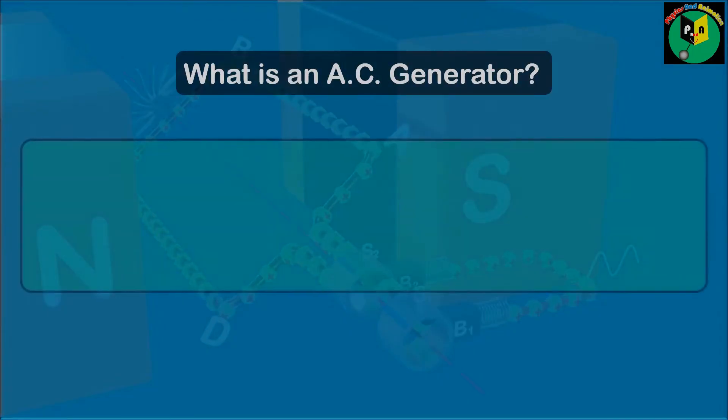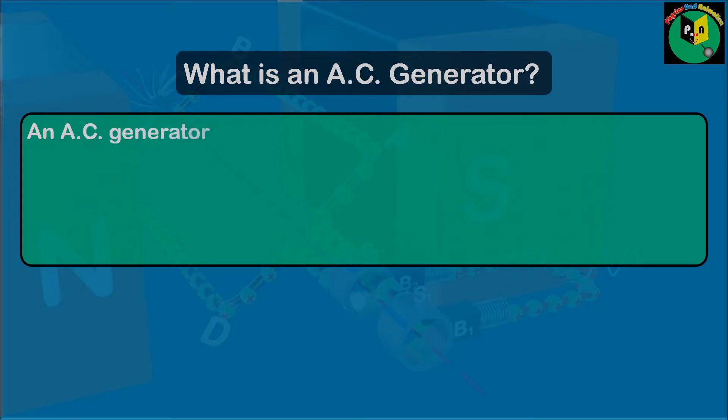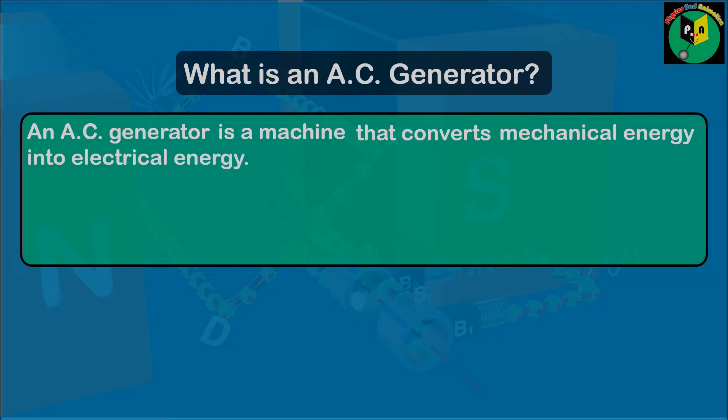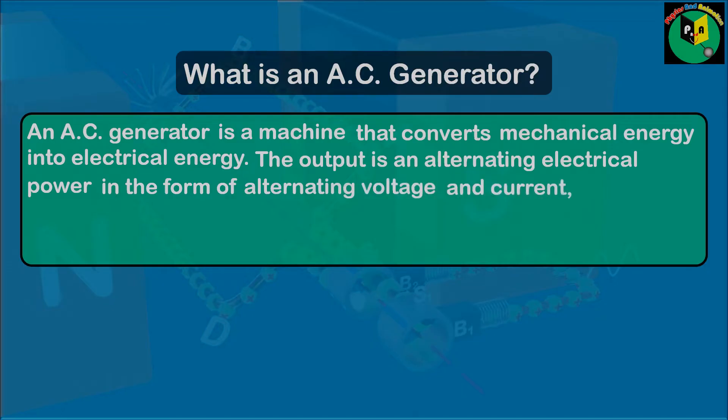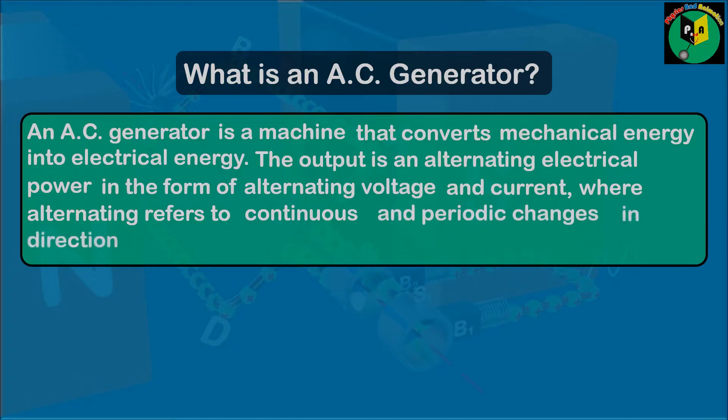What is an AC generator? An AC generator is a machine that converts mechanical energy into electrical energy. The output is an alternating electrical power in the form of alternating voltage and current, where alternating refers to continuous and periodic changes in direction and magnitude.